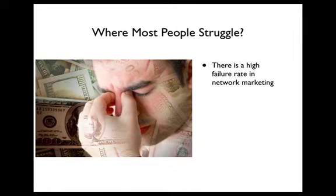Where do people struggle? Obviously there is a high failure rate in network marketing - about 97%. Three months after they've recruited, they're not making tens of thousands of dollars a month and they're gone. The reason is they're not using attraction marketing. When people are recruited into a network marketing business it's usually a family member or friend. But people who are signing others up on autopilot are using attraction marketing - both online and offline - to draw people to them through value.